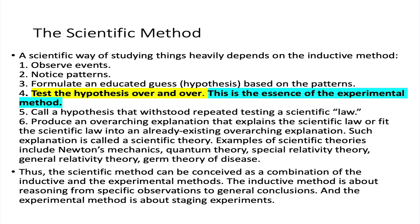Let's talk about the scientific method. A scientific way of studying things heavily depends on the inductive method. The inductive method is about making observations that are specific, and then on the basis of those observations, you proceed to general conclusions. So the first step of the scientific method is to observe events. Second, you notice patterns.